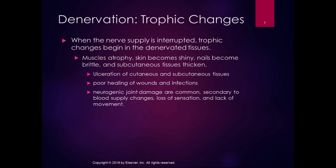One end-stage trophic change with neurogenic joint damage is called Charcot foot — it's very distinctive, almost like the joints in the foot collapse completely. Surgery can be attempted but it's a procedure of last resort. All of this happens from denervation, which can be from a traumatic injury or a metabolic or ischemic injury.